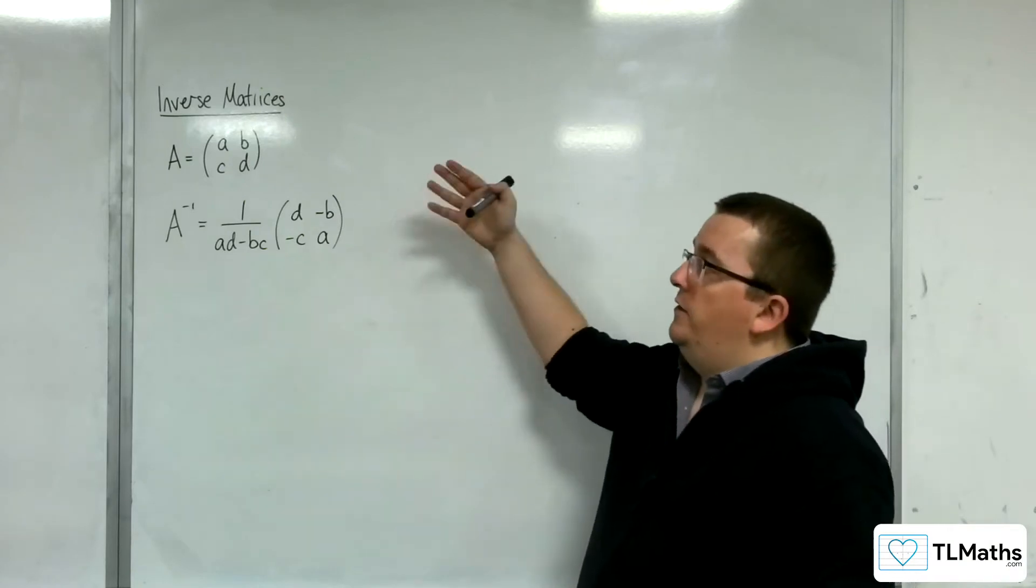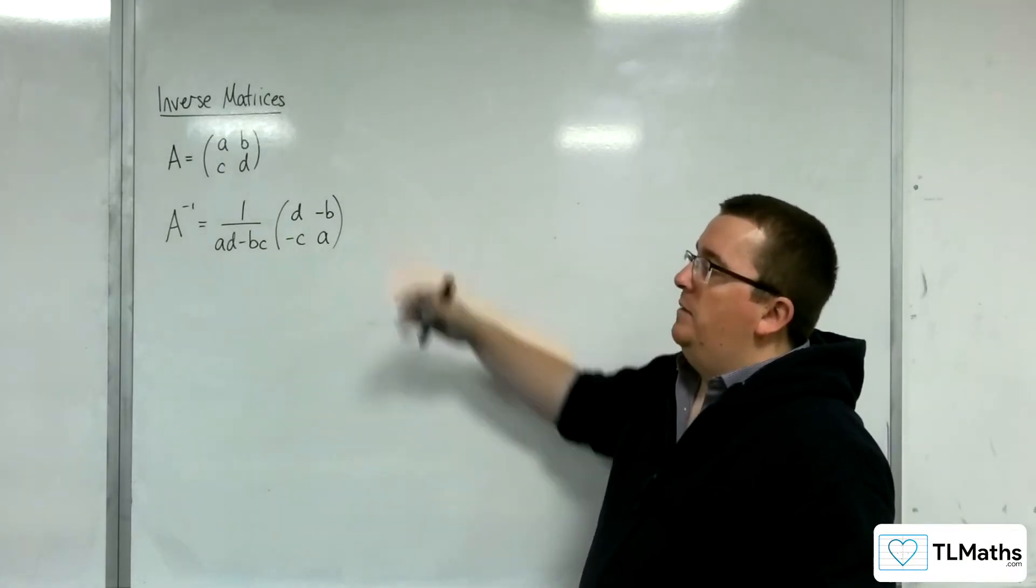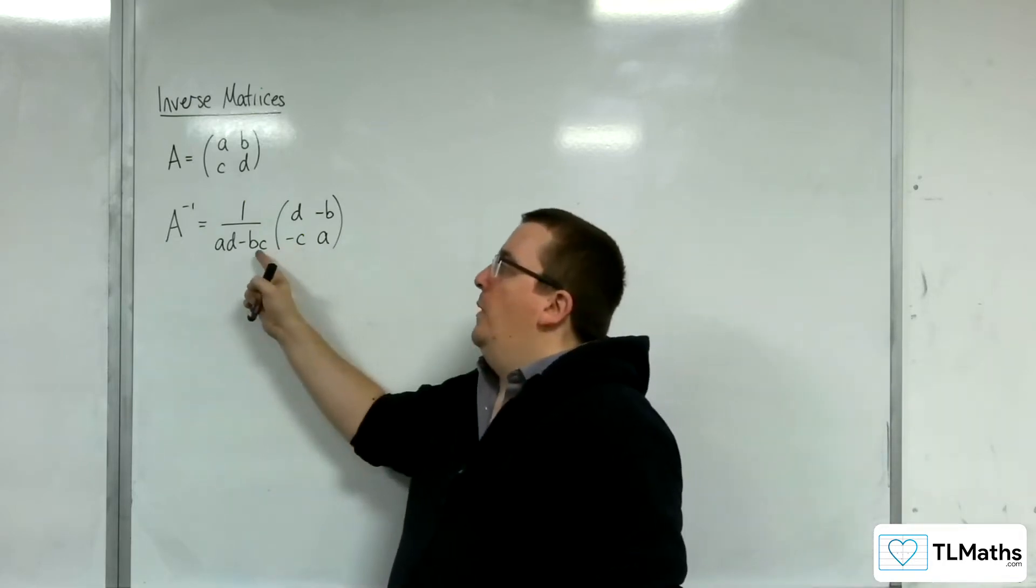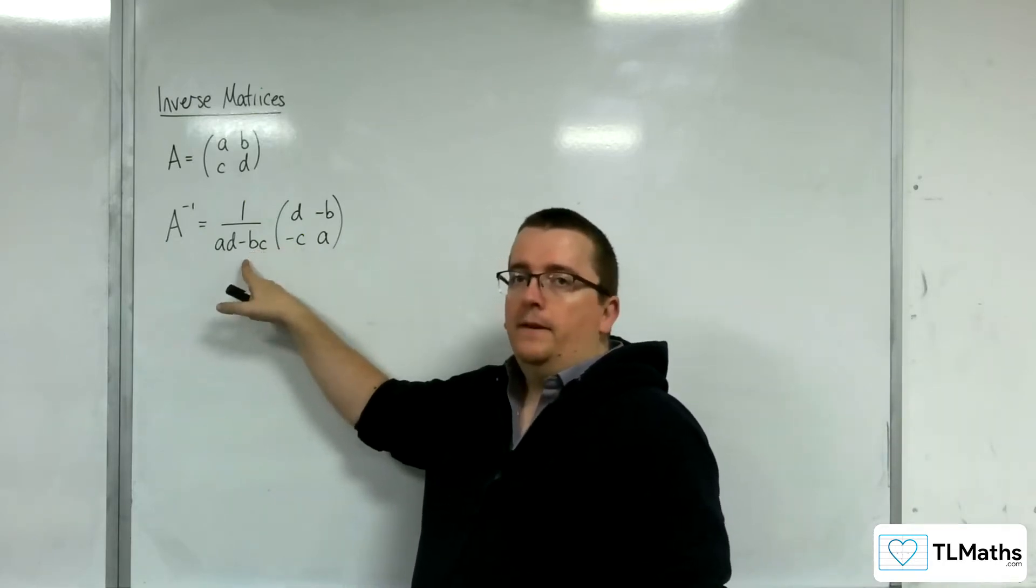So, in the previous video, we derived the inverse matrix A minus 1. And what we recognised is that we have this 1 over the determinant of A here.